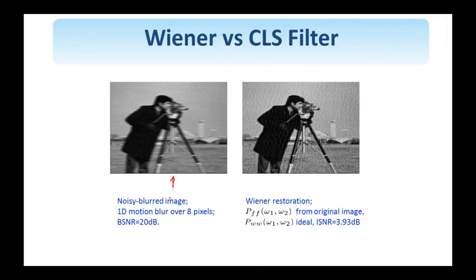We show here on the left a noisy blurred image — the same example used throughout, with 1D motion blur over 8 pixels and blurred signal-to-noise ratio of 20 dB. On the right, you see the restored image utilizing this non-causal Wiener restoration filter, using the power spectrum computed from the original image and exact knowledge of the noise. This is in some sense the upper bound of the performance of the Wiener filter. In a realistic application we would need to estimate P_FF and P_WW. The improvement in signal-to-noise ratio for this case is 3.93 dB — a rather good restoration where noise is not terribly amplified and some sharpness has been restored.